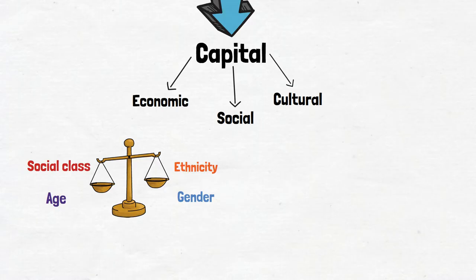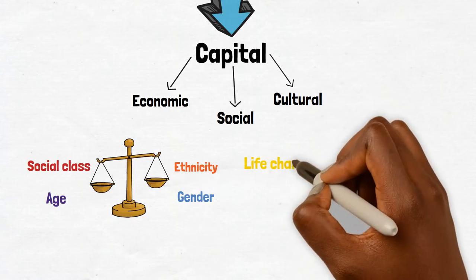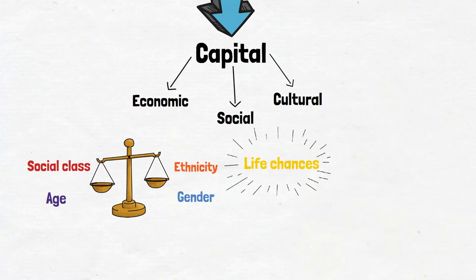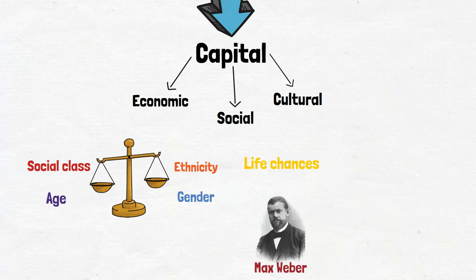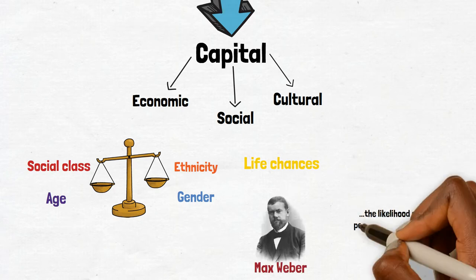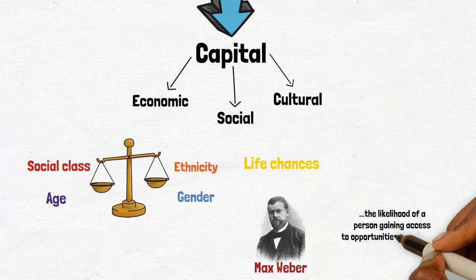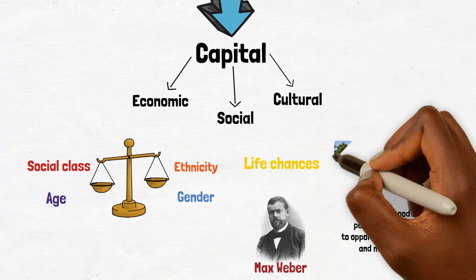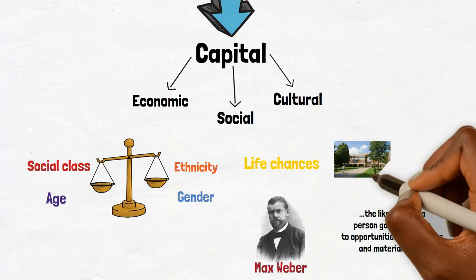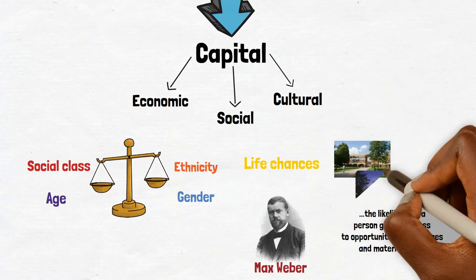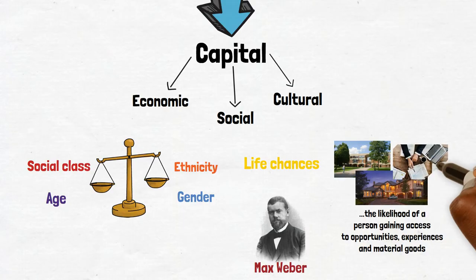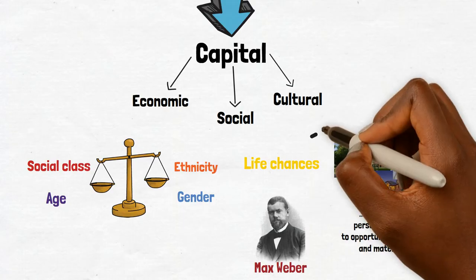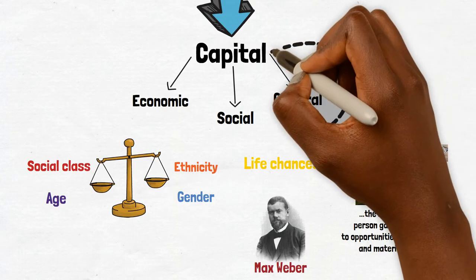Discussions of capital are closely linked to life chances, a term coined by sociologist Max Weber, which describes the likelihood of a person gaining access to opportunities, experiences, and material goods. A person's life chances are improved if, for example, they have family members who have been to university, or if they have enough money to buy a house or start their own business. In short, high levels of capital tend to increase life chances.